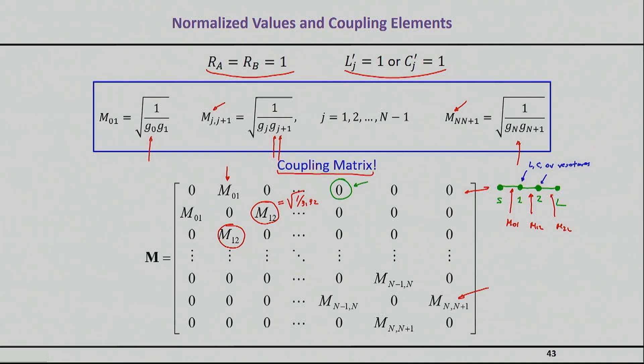The coupling matrix goes hand in hand with this type of writing the filter topology, which is very quickly done and intuitive. When we say M02 equals zero, we mean there is no coupling between the source and the second element of the filter.